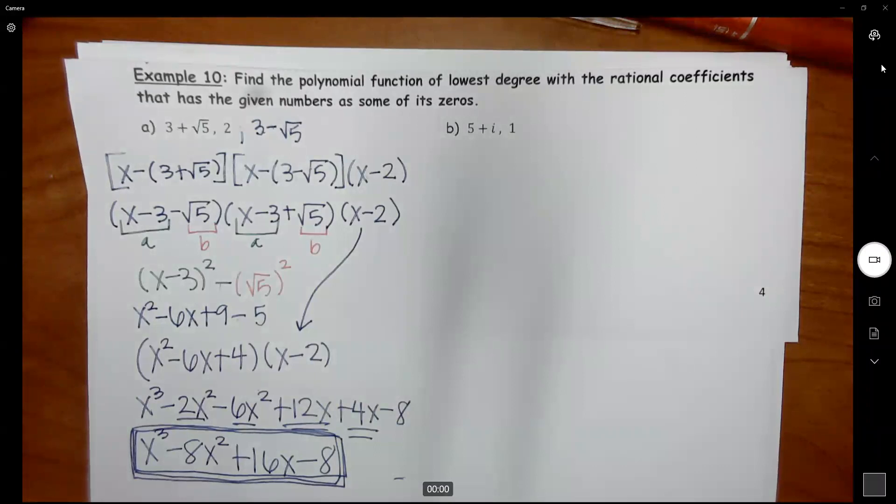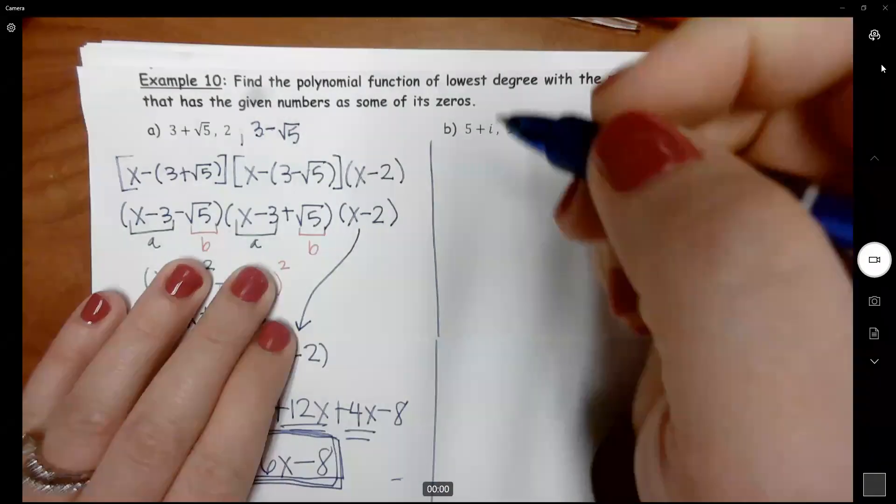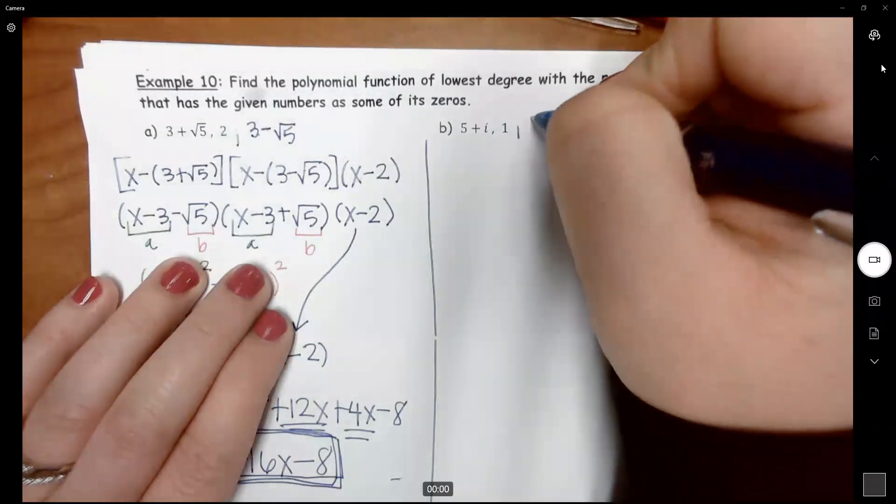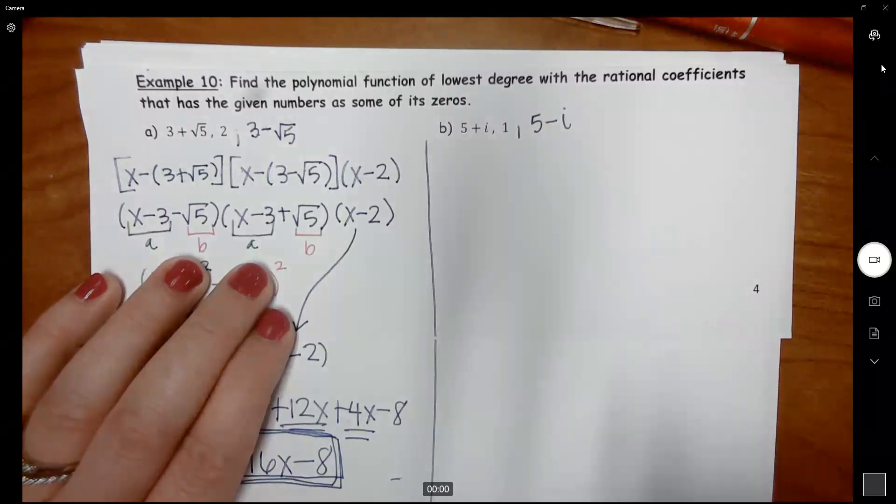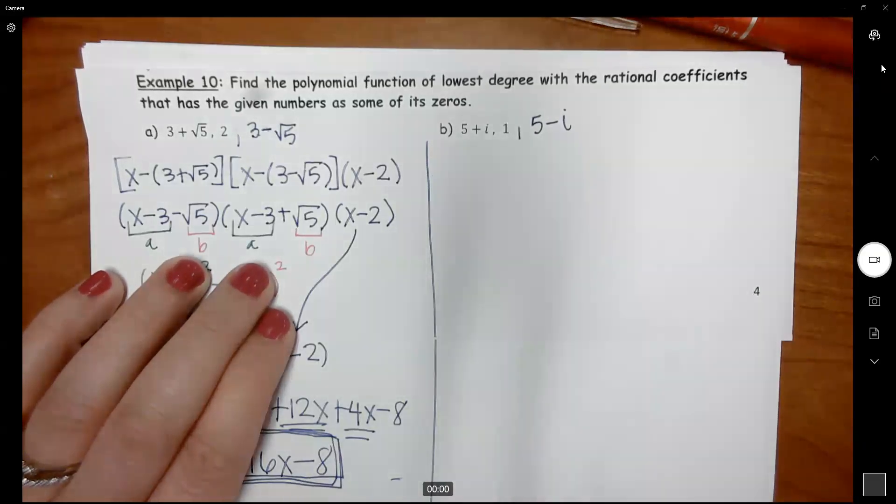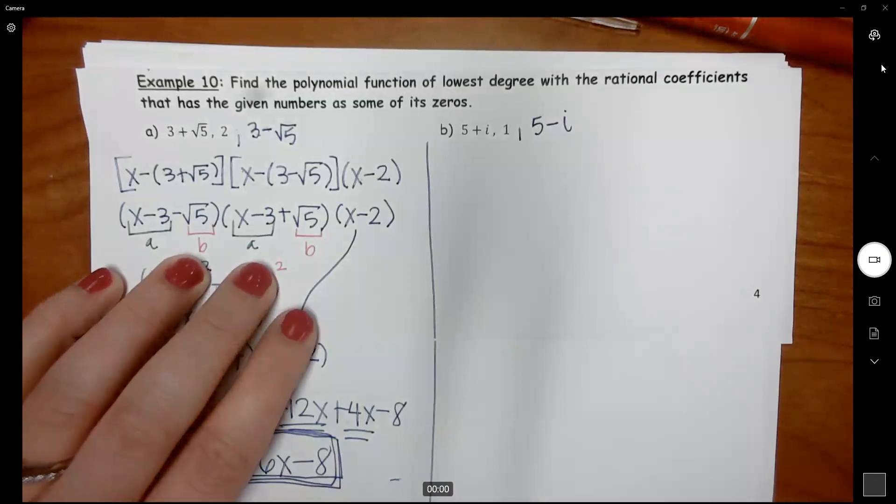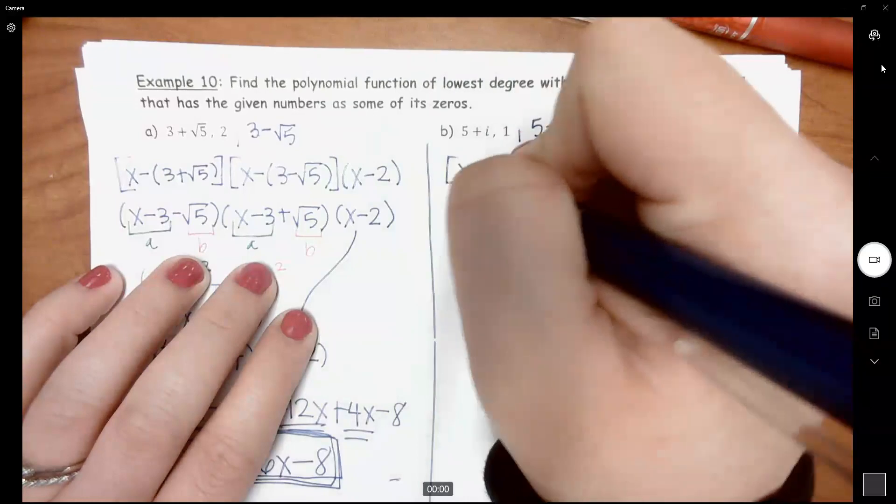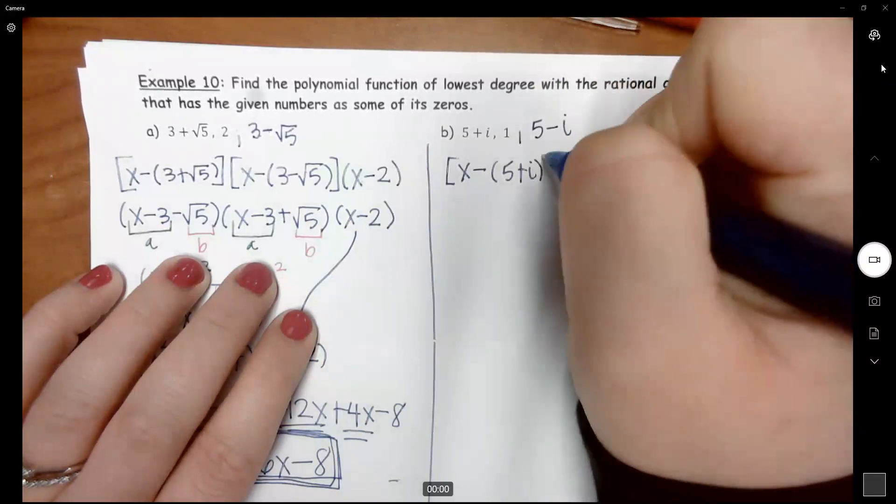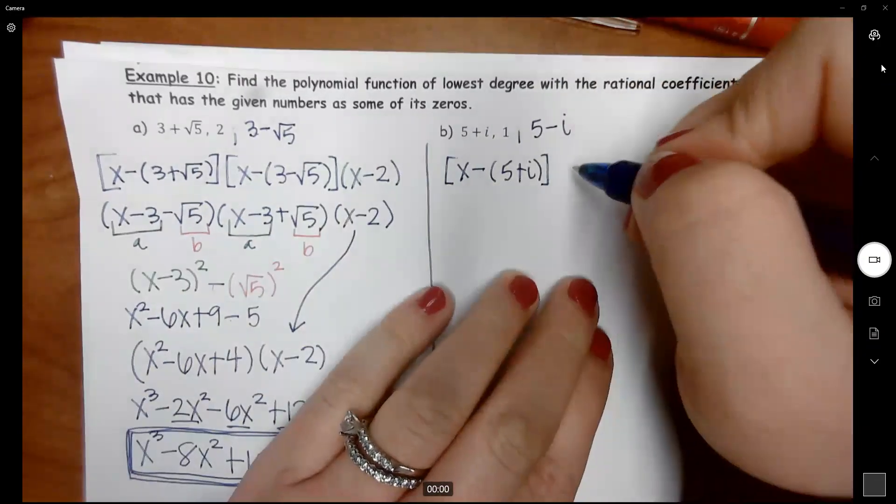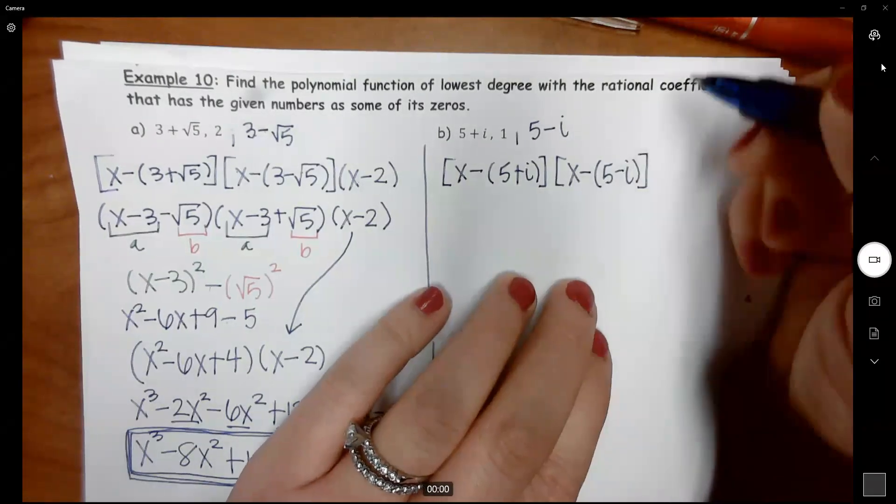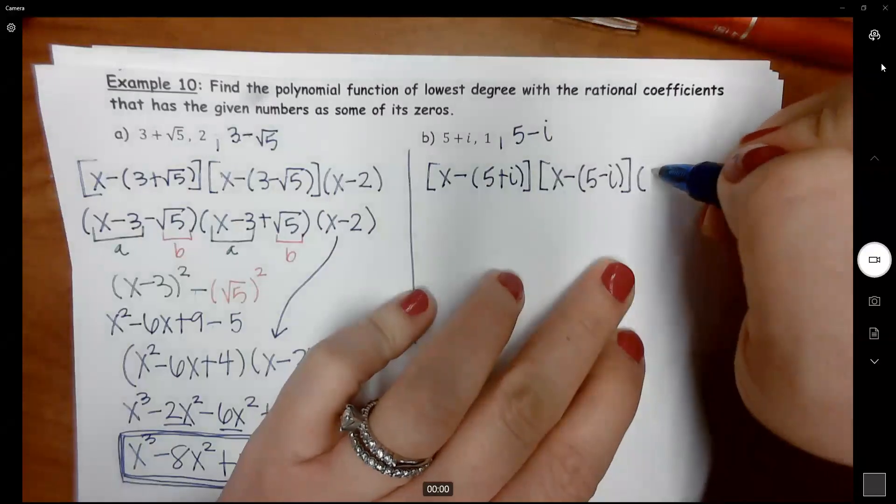Algebra. Let's try algebra again. If I have 5 plus i and 1, I know my other zero is 5 minus i. The fives are both positive, but what goes in front of the i changes signs. So do the same thing here. It's always X minus your zero. I'm going to put my complex zeros together. So X minus these right here, and then X minus your zero here, which is just X minus 1.